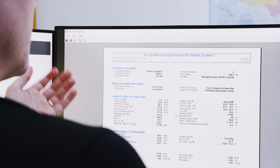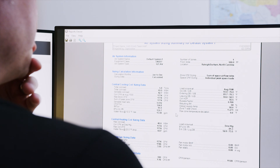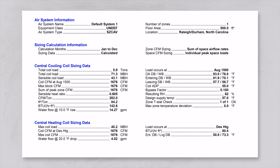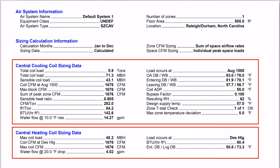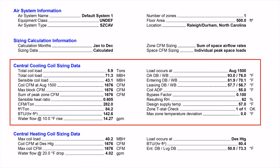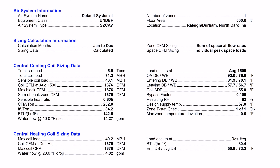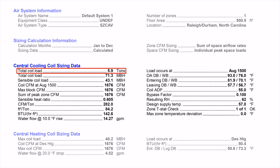Once Colby has finished inputting all the parameters, the software outputs a load calculation analysis for the building — a comprehensive report with both cooling and heating data. We'll focus on the cooling side as it's the most complex. Right off the bat, the load calc report suggests a 5.9-ton unit at 1,676 CFM.